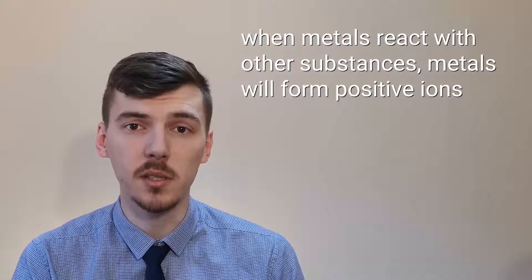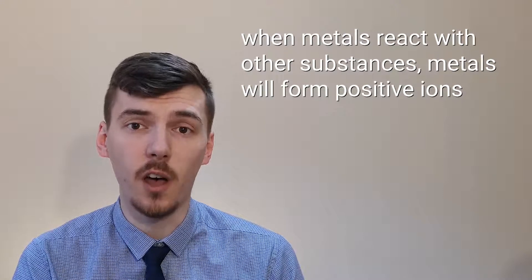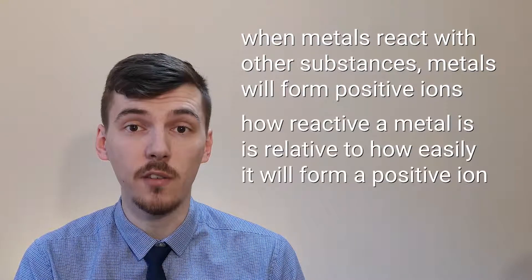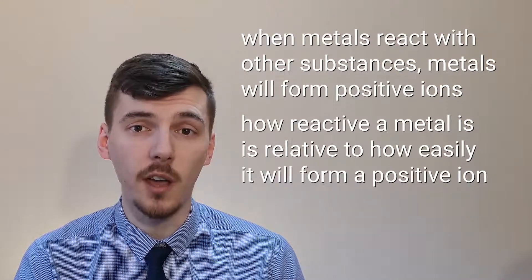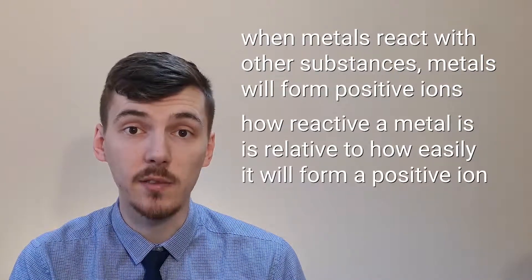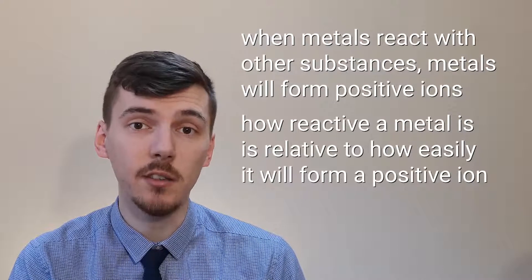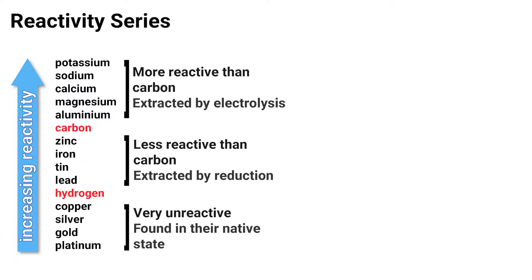When metals react with other substances, metals form positive ions. The reactivity of a metal is related to its tendency to form positive ions. The higher up the reactivity series the metal is, the easier it is to oxidise. Metals can be arranged in order of their reactivity in something called the reactivity series. On the screen now is the reactivity series that you need to know. These metals have been arranged in this order based on their average reactions with things like water and dilute acid.